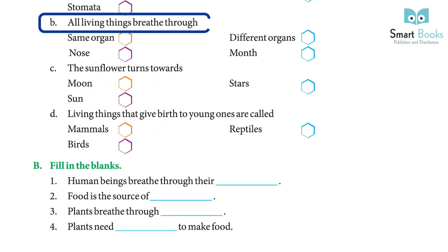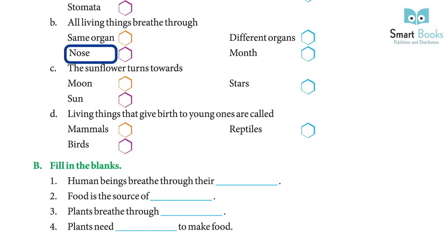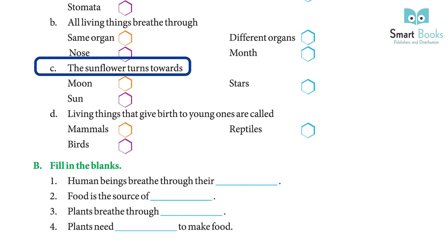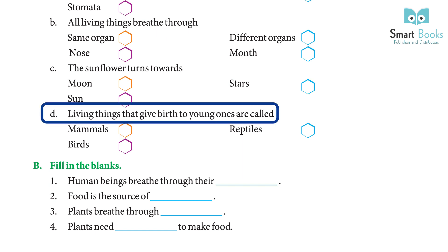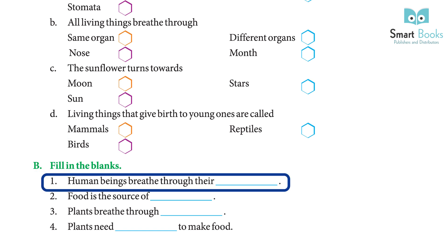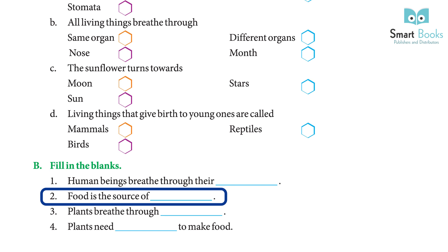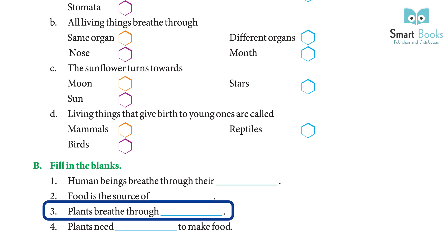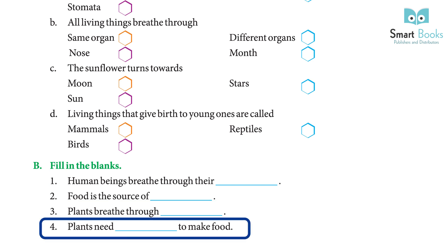B: All living things breathe through — Same organ, Different organs, or Nose? Answer: Different organs. C: The sunflower turns towards — Moon, Stars, or Sun? Answer: Sun. D: Living things that give birth to young ones are called — Mammals, Reptiles, or Birds? Answer: Mammals. Fill in the blanks: 1. Human beings breathe through their — Answer: Nose. 2. Food is the source of — Answer: Energy. 3. Plants breathe through — Answer: Stomata. 4. Plants need — to make food. Answer: Sunlight.